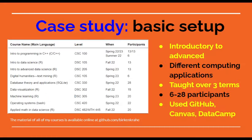Coming to the case study itself: the courses ranged from introductory to advanced, as you can see in the table on the left-hand side. The topics cover different programming applications, and the courses were taught over three consecutive terms. There were between six and 28 participants per course. I used a few other tools besides Emacs: GitHub as the main repository, DataCamp for structured online lessons and exercises, Canvas as a learning management system, and Zoom to record sessions. The material for all these courses is openly available on GitHub at the address shown at the bottom of the slide.